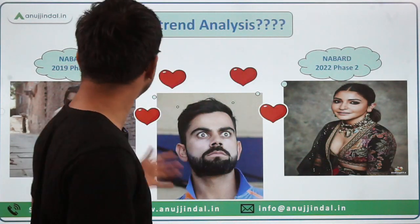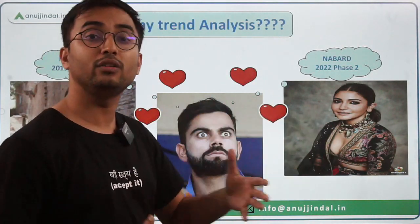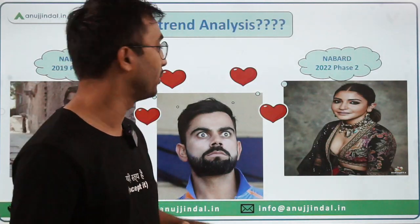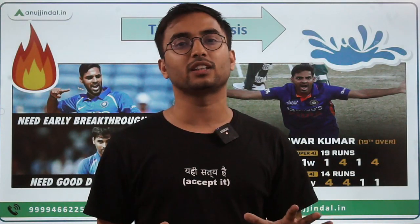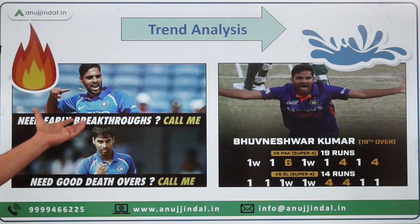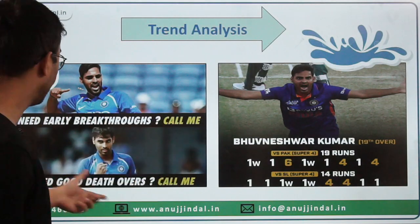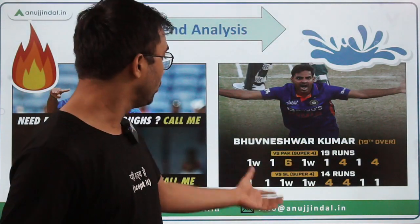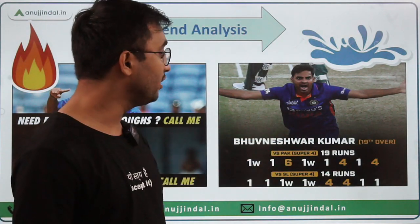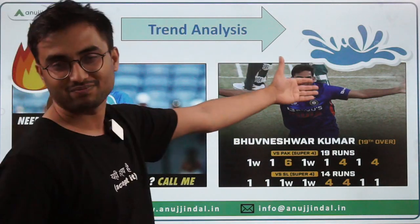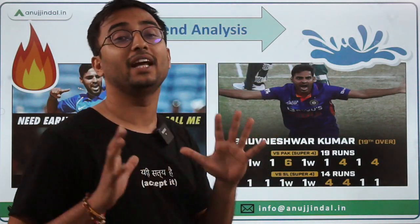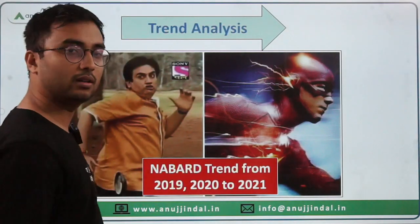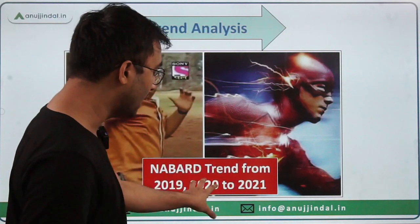Aspirants also get shocked when they compare answer sheets from different years and see the definite change in pattern or the way questions are asked. The best example of trend analysis is the recent Asia Cup. We all knew Bhuvneshwar Kumar was such a great bowler for early breakthroughs and death overs. But what we saw in Asia Cup was a completely different trend — 19 runs versus Pakistan and 14 runs versus Sri Lanka where we were knocked out. From fire to really water — this is trend analysis. Similarly, we are going to see trend analysis for Phase 2.